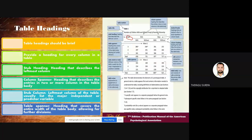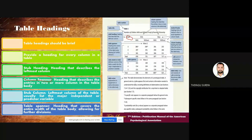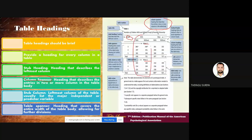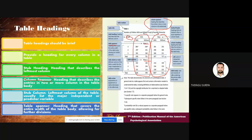There is also a column spanner — a heading that describes and spans into two or more columns in the table body. In this example, the column is divided into girls and boys — that's called a column spanner. If you divide the table into two table-wise sections, it's called a table spanner. If you divide row-wise, it's called a row spanner. The stub column is the leftmost column of the table, usually containing the major independent or predictor variable.